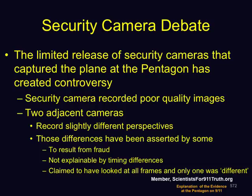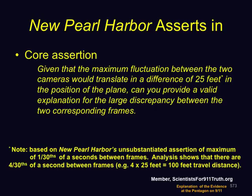One claim is the cameras took identical frames except for only one that was different. The movie The New Pearl Harbor is the source of some of this controversy. The core assertion there, provided by the narrator, is: given that the maximum fluctuation between the two cameras would translate into a difference of 25 feet in the position of the plane, can you provide a valid explanation for the large discrepancies between the two corresponding frames?